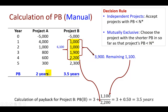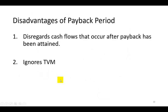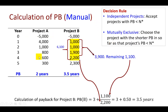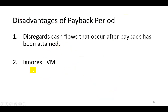This choice based on payback period reveals one of its weaknesses: the payback period disregards cash flows occurring beyond the payback. By choosing A over B when they are mutually exclusive, we ignore some attractive cash flows coming later for Project B. Secondly, the payback period ignores the time value of money.